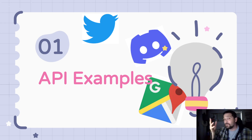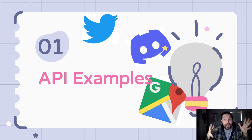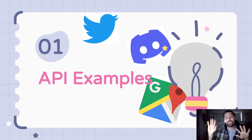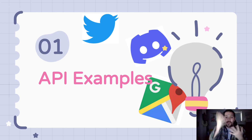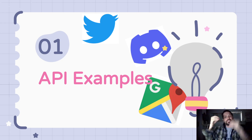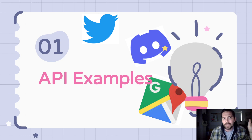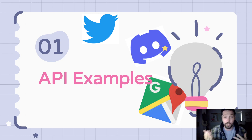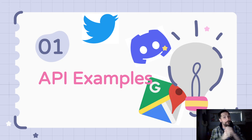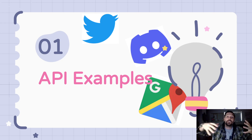Discord is another example. What if I want a bot to moderate my chat? What if I want to combine my Discord chat with my Twitch and YouTube stream and put that into OBS? Having all of those things connect together — all of that is done with APIs. All of them. We don't have to care how it works; we can just use it.